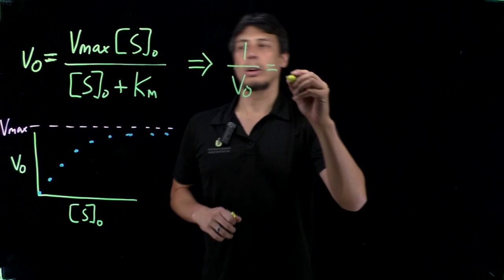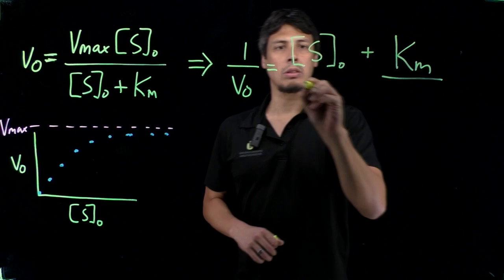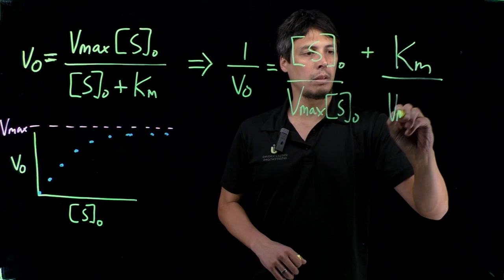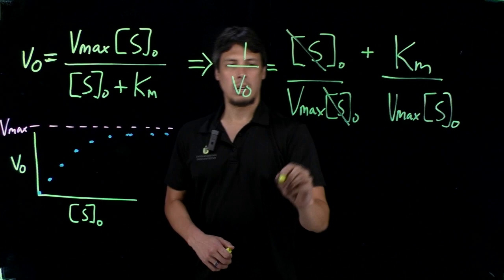As we do that, these terms can be separated, and they all have the same denominator: Vmax times S-naught on the left hand side and also Vmax times S-naught on the right hand side. This simplifies because S-naught cancels out.